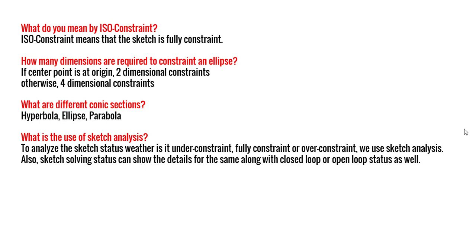I can check whether my sketch is a fully closed loop or not. If yes, then we can apply features for converting it into a solid; if not, then we cannot — I cannot accept an open loop sketch while creating a solid model. So before exiting the sketch environment and before applying any feature, after completion of the sketch we always check using sketch analysis whether our sketch is fully constrained or ISO constrained or not, and using the sketch solving status option we check whether it is a closed loop or not.